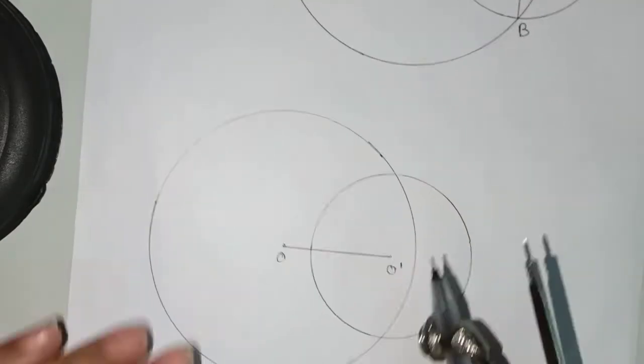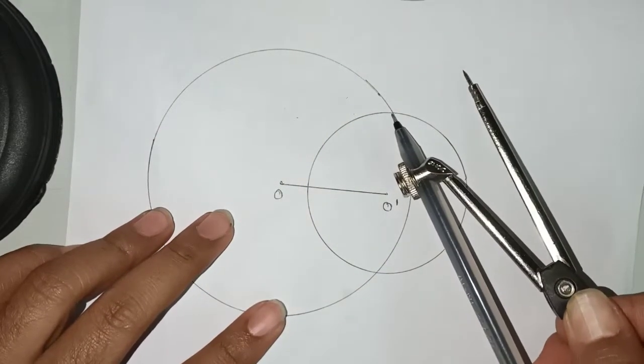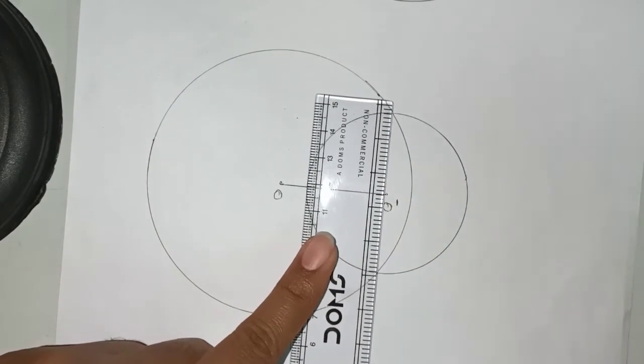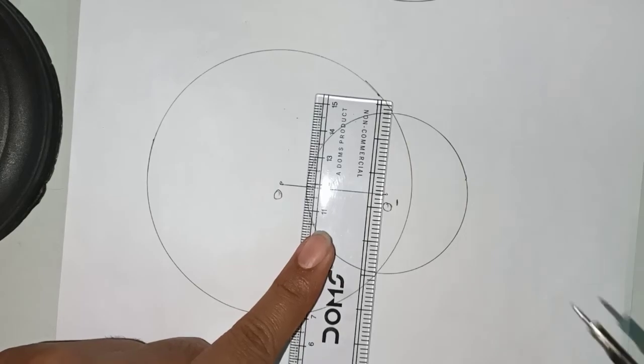Now join the intersecting points. Here you are getting two intersecting points, join it. You can see that it is passing through your center O prime.